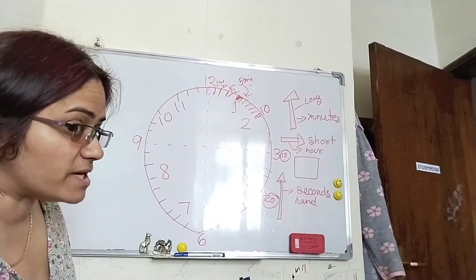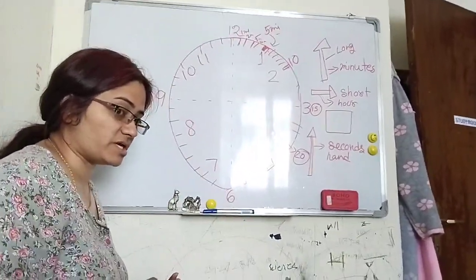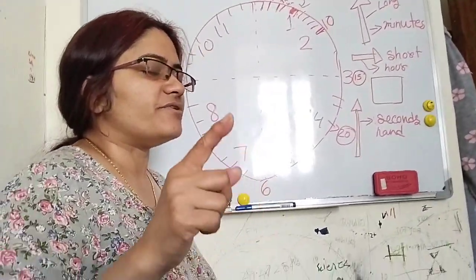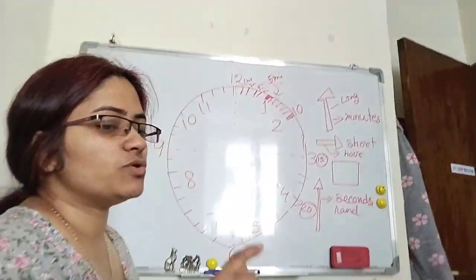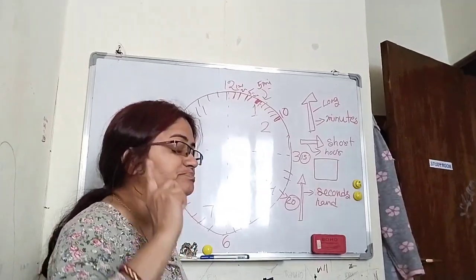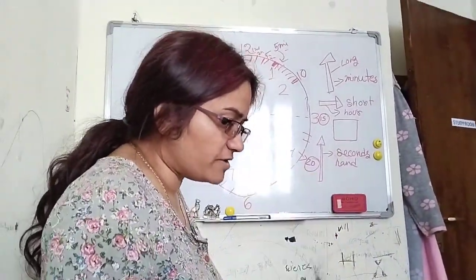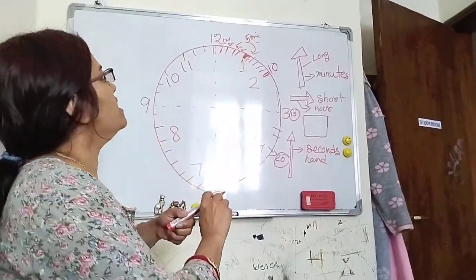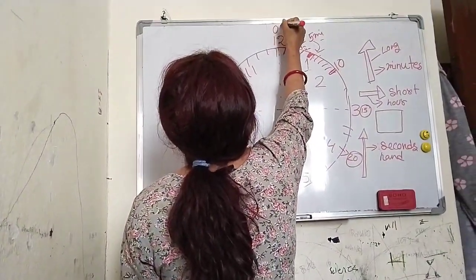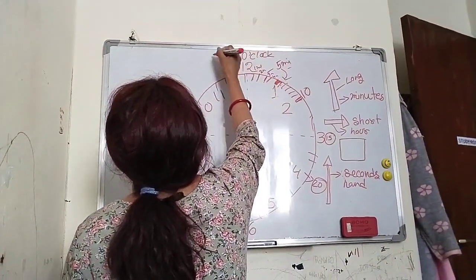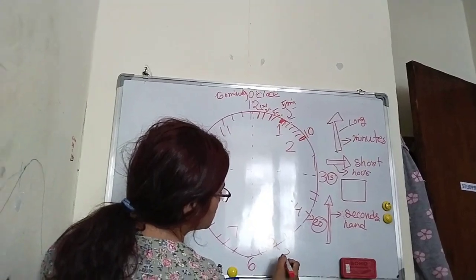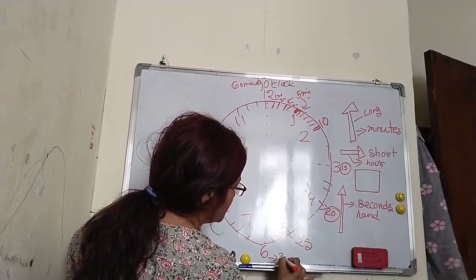That means the number 5 represents five times five. Listen carefully: five, ten, fifteen, twenty, twenty-five, thirty, thirty-five, forty, forty-five, fifty, fifty-five, then sixty. When our long hand is at 12, we say o'clock — that means sixty minutes completed. O'clock means sixty minutes.